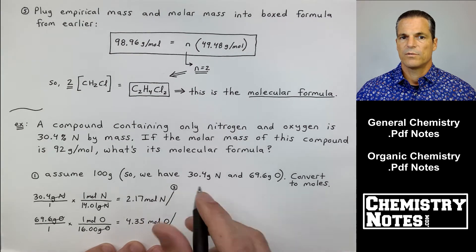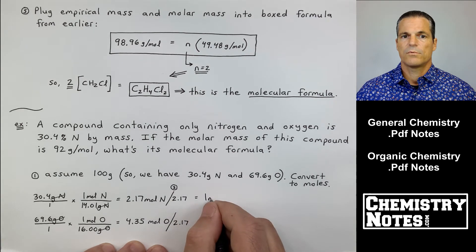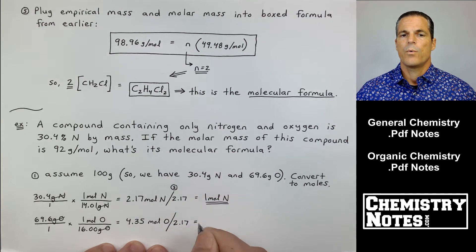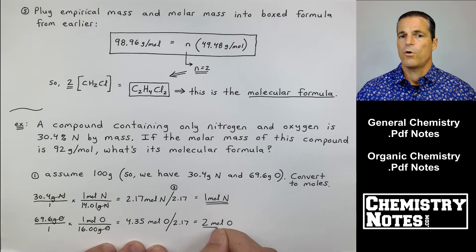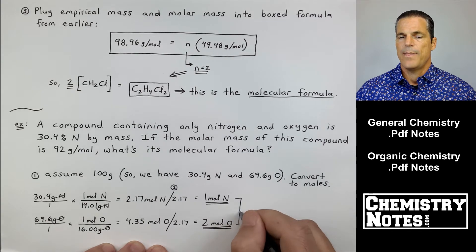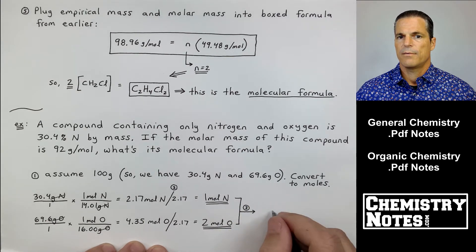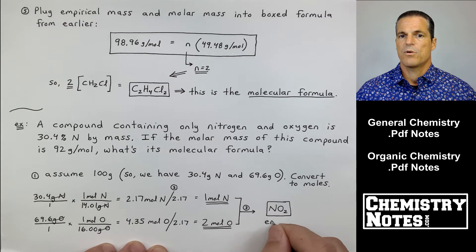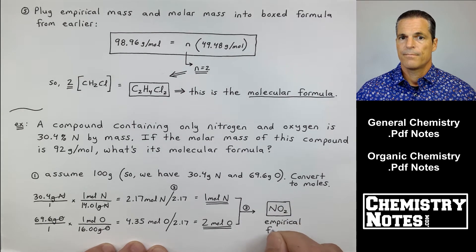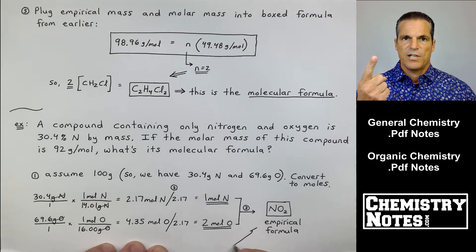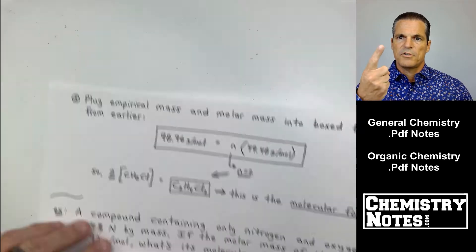Rule number one: we assume 100 grams, so we've got 30.4 grams nitrogen, 69.6 grams oxygen. We convert to moles, divide by the atomic masses of nitrogen and oxygen respectively. We get 2.17 moles, 4.35 moles. Divide by the lowest number for both, 2.17.